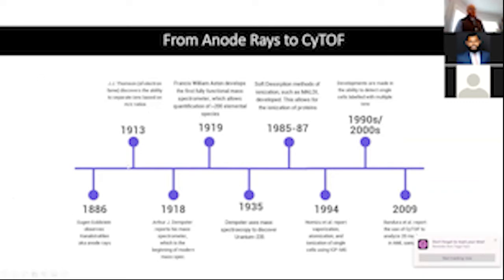So MALDI and other soft desorption methods are invented in the 80s. In 1994, Nemizu et al., who is cited in the Bandura paper we're reviewing today, report the vaporization, atomization, and ionization of single cells using ICP-MS. So that's quite important for Cytoff's applications. Then in the 1990s and 2000s, there's more developments made to enable the detection of single cells labeled with different ions, which ultimately comes to 2009. Bandura et al., and the group at Toronto, report the use of Cytoff to analyze up to 20 markers, 20 markers in this case, in AML samples. This was kind of the main one that really put everything together and put Cytoff on the map.